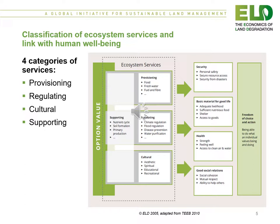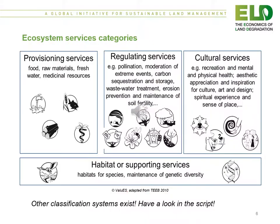This figure shows the link between the four categories of ecosystem services and human wellbeing. The four categories are provisioning, regulating, cultural and supporting ecosystem services. This figure provides some examples of the four categories of ecosystem services. Please note that other classification systems exist and you can find more details on them in the script.